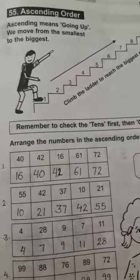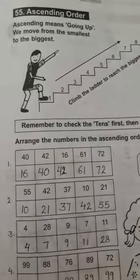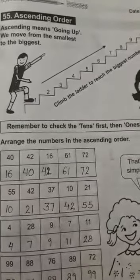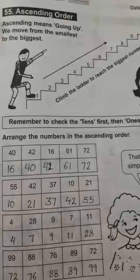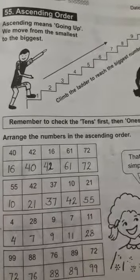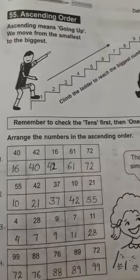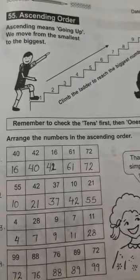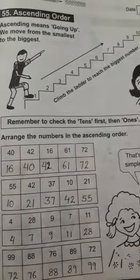Hello children, good morning everyone. I hope you are all fine. You might have studied about numbers and comparison of numbers in your previous topics and classes. Today we will study about ordering of numbers. When we compare numbers from smallest to greatest, that is called ascending order. It means going up, climbing the ladder from the smallest to reach the biggest number.